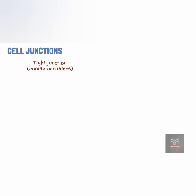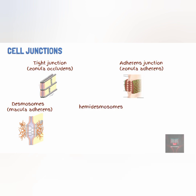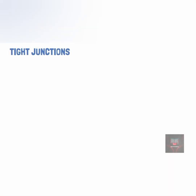The tight junctions, also called the zonula occludens; the adherence junctions, also called the zonula adherens; the desmosomes, also called macular adherens; the hemidesmosomes; and the gap junctions. The tight junction, also referred to as the zonula occludens, forms a tight belt around the cell.